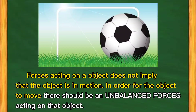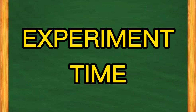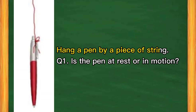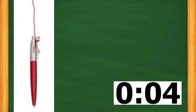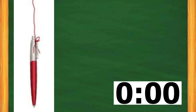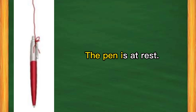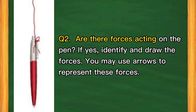In order for the object to move, there should be unbalanced forces acting on that object. Experiment time! Hang a pen by a piece of string. Is the pen at rest or in motion? Are there forces acting on the pen? If yes, identify and draw the forces. You may use arrows to represent these forces.